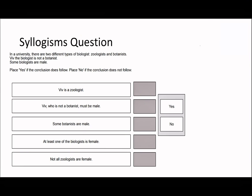In the next question, in a university there are two different types of biologists: zoologists and botanists — so there are only two types. Viv the biologist is not a botanist, so Viv must be a zoologist. Some of the biologists are male. So, is Viv a zoologist? Yes, we know that must be true since she's not a botanist. Must Viv, who is not a botanist, be male? Not necessarily.